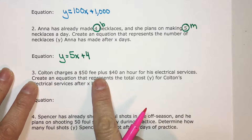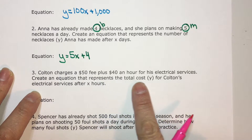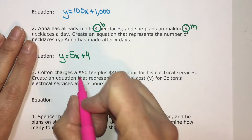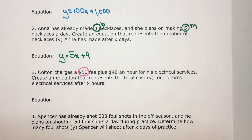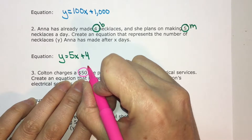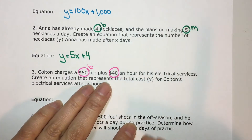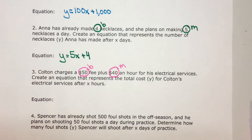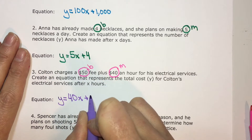Colton charges a $50 fee plus $40 an hour for his electrical service. Create an equation that represents the total cost y for Colton's electrical services after x hours. He charges a $50 fee — when he shows up to do electrical work, that's the starting amount, the initial value, so that's b. It's $40 an hour, so every hour it's increasing by $40, so that's m, the rate of change. The equation is y equals 40x plus 50.